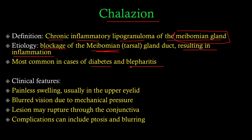Chalazions are commonly seen in patients with diabetes and blepharitis. Blephar refers to eyelids and itis refers to inflammation — so blepharitis means inflammation of the eyelids. We'll be discussing blepharitis in more detail in a future lecture.